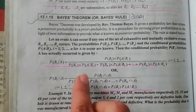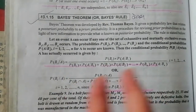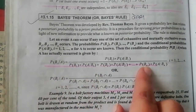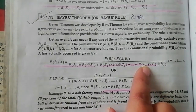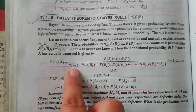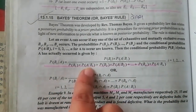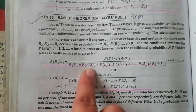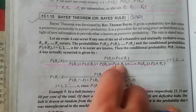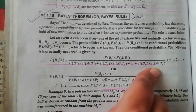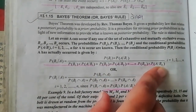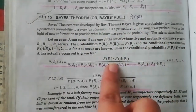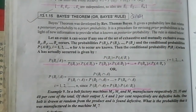In the denominator, if you have three cases, you sum: P(B1) multiplied by P(A|B1), plus P(B2) multiplied by P(A|B2), plus P(B3) multiplied by P(A|B3). Let's look at the question and understand it first.